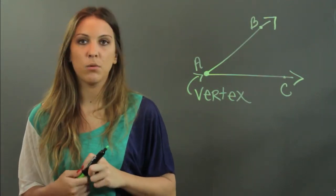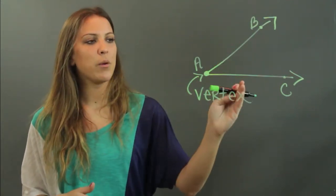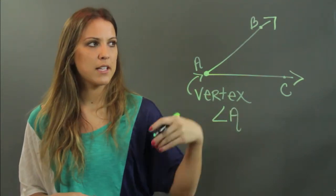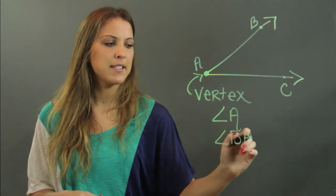And the vertex is important because that's how you label the angle. So this angle right here would either be called just angle A, or if you wanted to name it completely, we would say angle BAC.